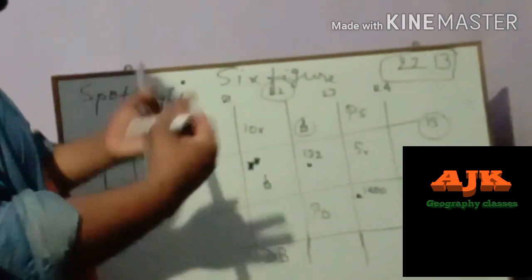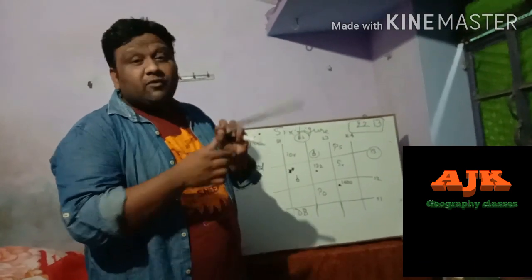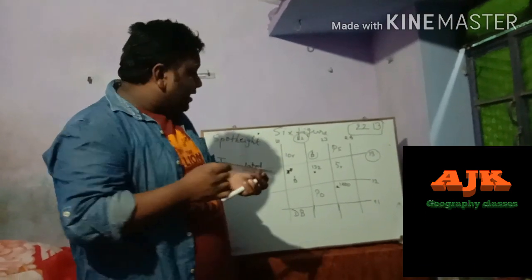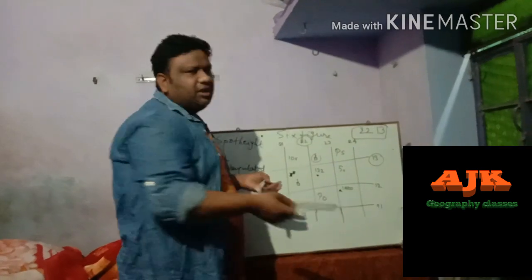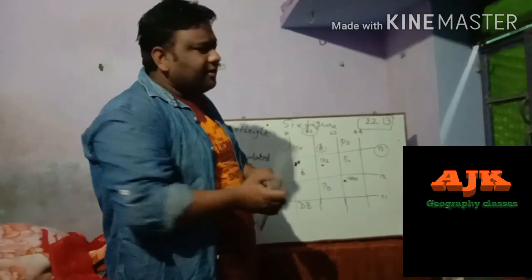Now let's talk about the six-figure grid reference. As you can see, I have a ruler in my hand. In the previous video I told you that the length of each grid square — each side — is actually two centimeters. If you look at the topographical map, you'll find a scale just below the map where it is written: two centimeters is equal to one kilometer.